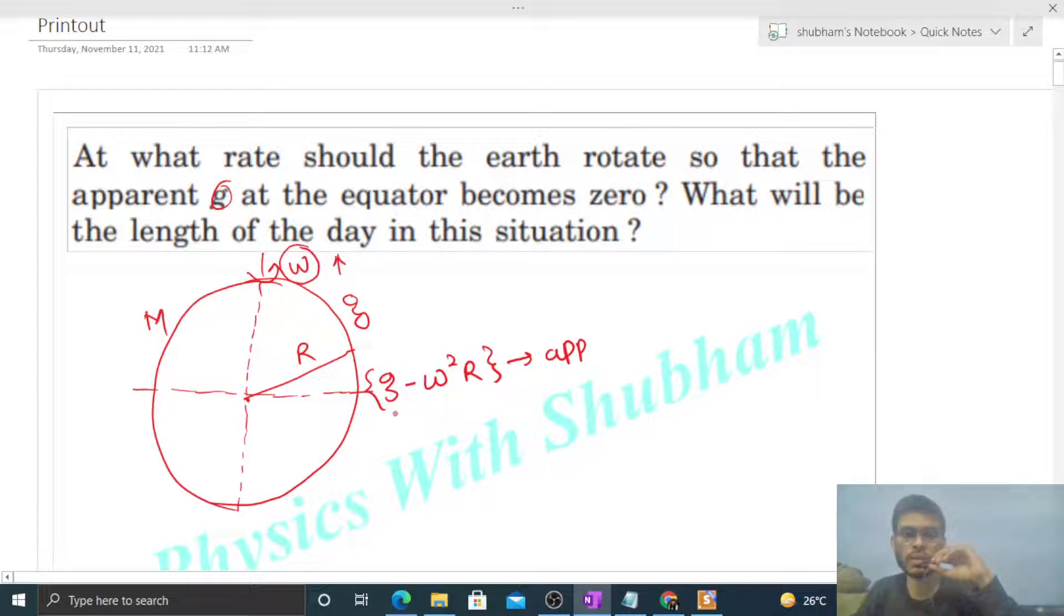So we have to find out that particular value of omega for which this apparent value of g will be zero. So g minus omega squared times capital R should equal zero. From here you will get the value of omega: that is square root of g divided by R.